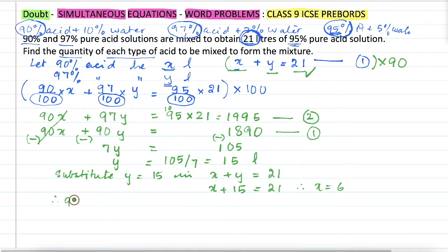90% acid is equal to x liters, which is 6 liters, and 97% acid, that was y liters, so that is equal to 15 liters, and this is our answer.